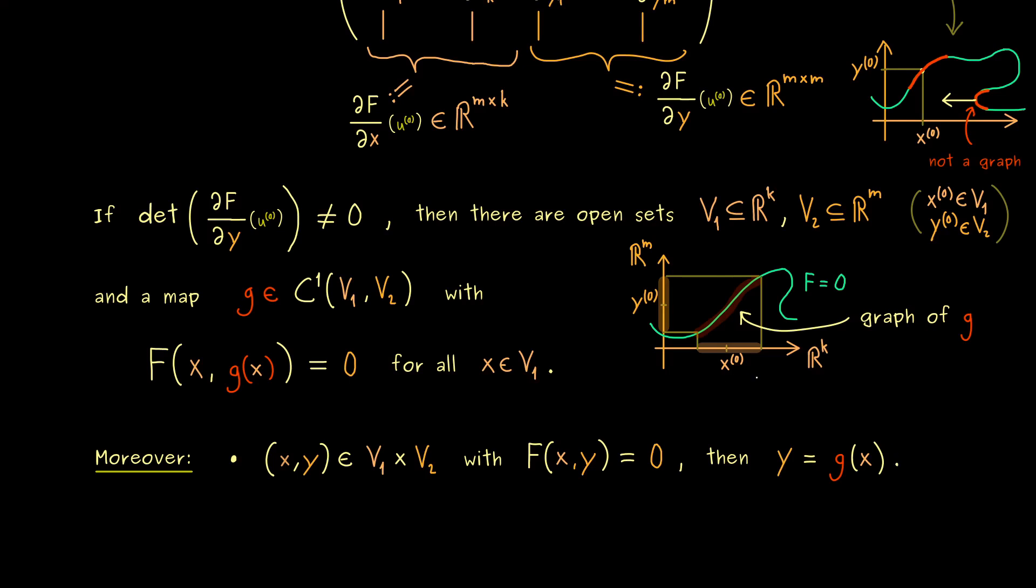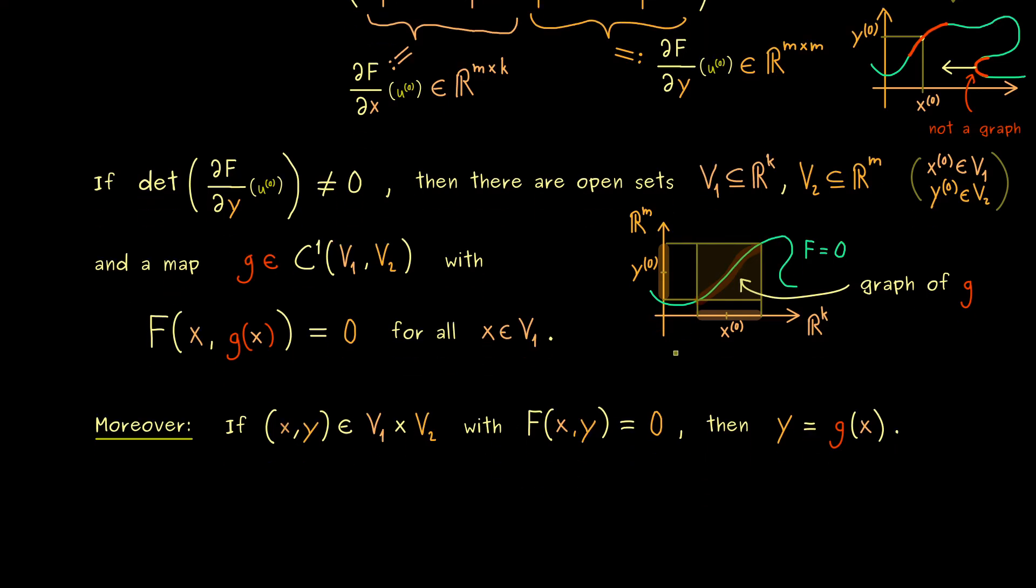Hence this means that V_1 and V_2 are chosen small enough. So visually we see that no other parts of the contour line lie in this rectangle. So in short, we have that, if we choose V_1 and V_2 small enough.